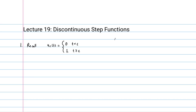The graphs of these step functions look as follows. If c is a positive number, this is our u sub c axis, and t is our independent variable. The function equals zero when t is less than c, and then at c it takes a step — that's why they're called a step function — up to a height of one. This is the general u sub c function.